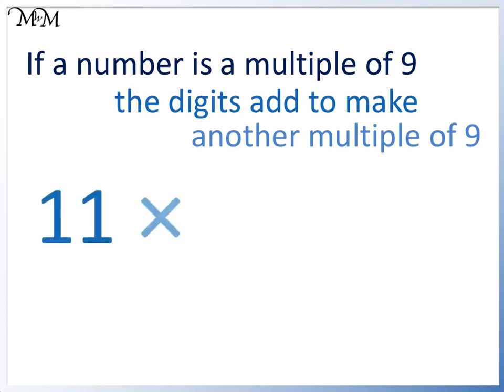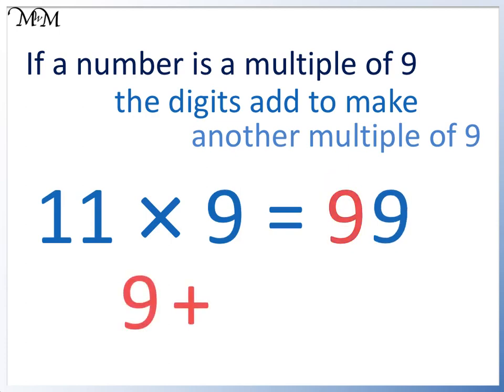11 times 9 equals 99. Here 9 plus 9 equals 18. 18 is a multiple of 9, and so we know that 99 is a multiple of 9.